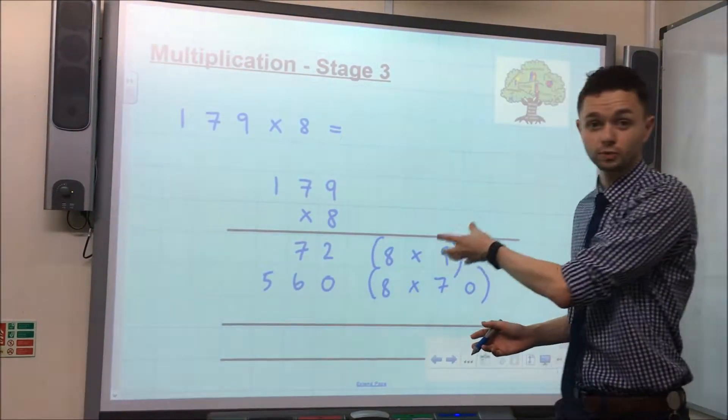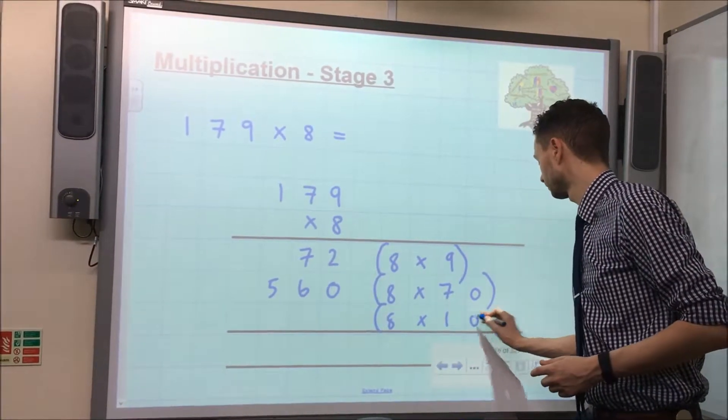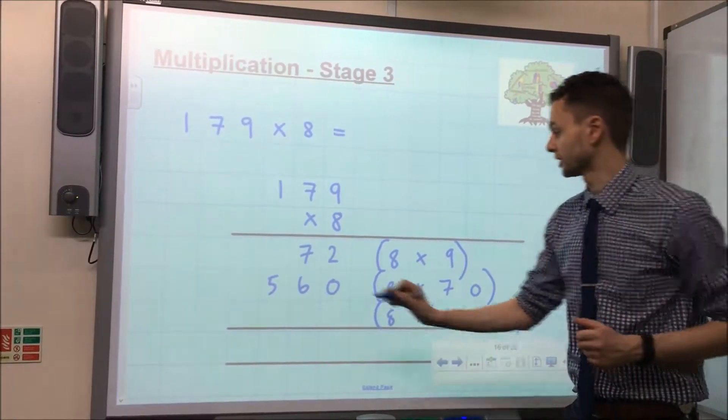Then the next stage is to multiply by the hundreds. So we've got 8 multiplied by 100, which is of course 800.